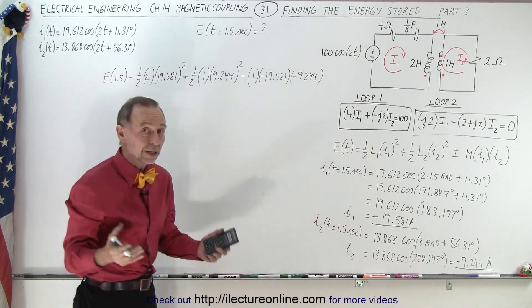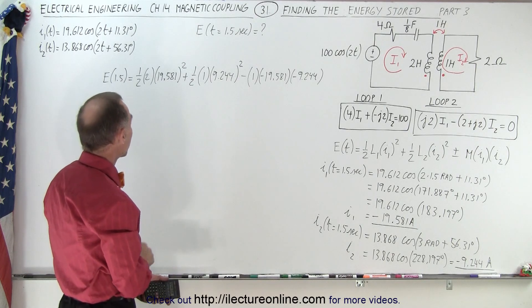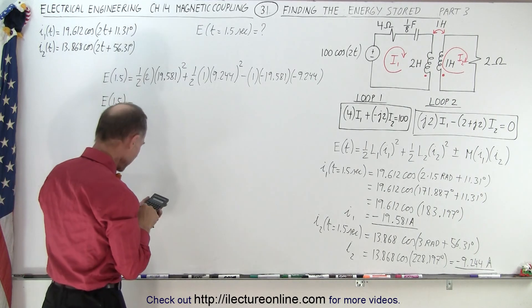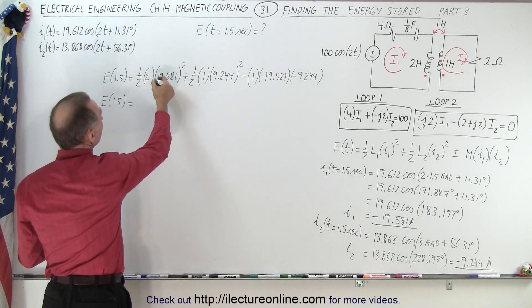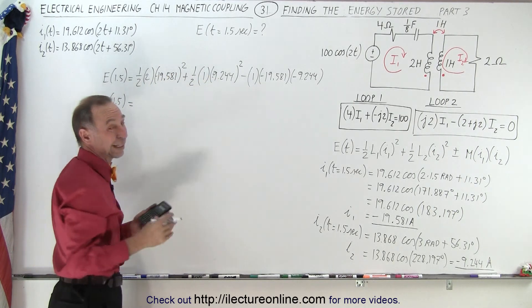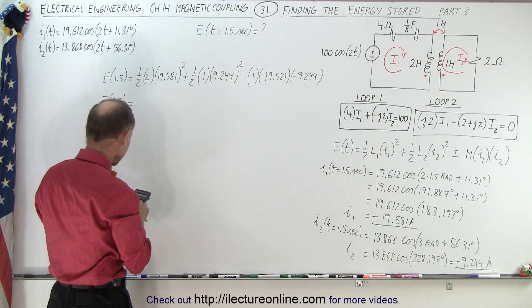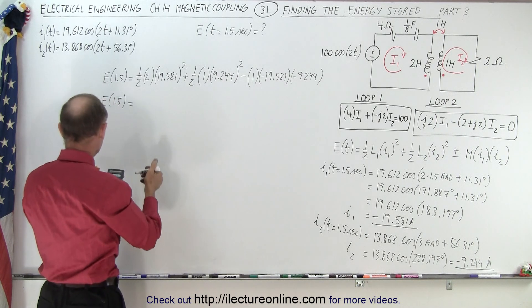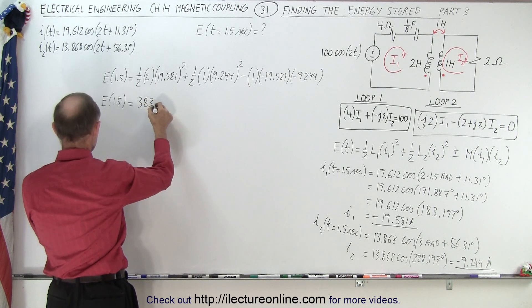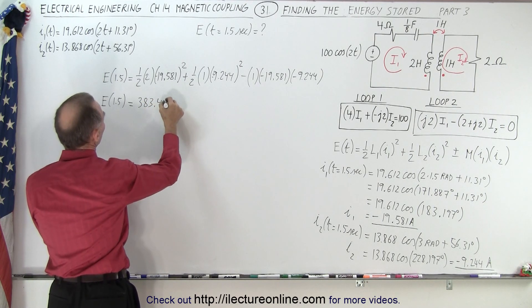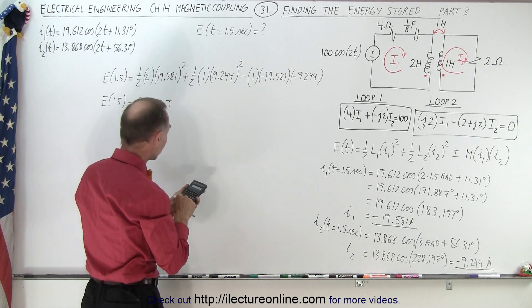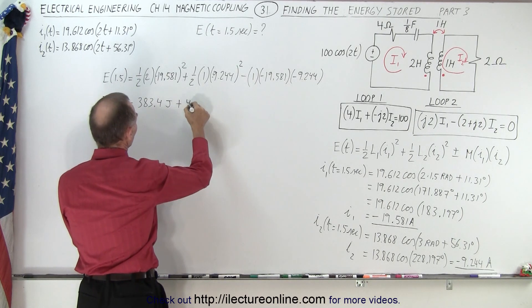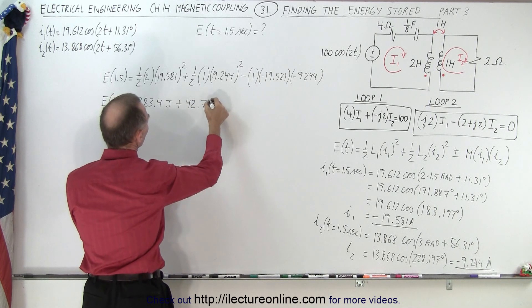But all that will still make that into a negative because two negatives times a negative is still a negative. So energy at 1.5 seconds equals 19.581 squared times 1 which gives us 383.4 joules. On the next one we get 9.244 squared divided by 2 we get plus 42.7 joules.